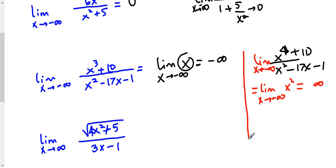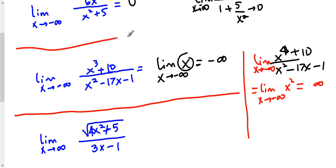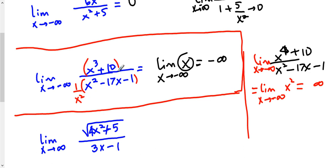If you want to use the longer approach — multiplying top and bottom by the highest degree term in the denominator, which is 1 over x squared — you can certainly do that and get the same answer. The second and third terms approach 0, and you're left with x on top and 1 on the bottom, with everything else going towards 0. So you end up with the same result.